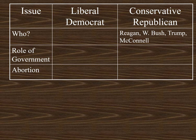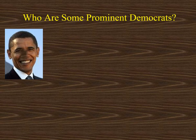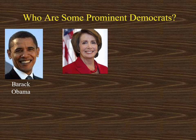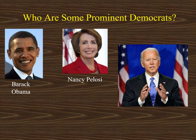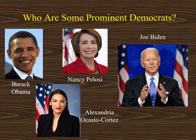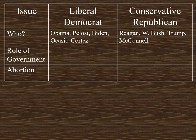Next, I'd like to identify four prominent Democrats. First, former President Barack Obama, who served from 2009 to 2017. Next is Nancy Pelosi — she is the Speaker of the House, the top Democrat in the House of Representatives, and the highest-ranking woman ever in Congress. Next, President Joe Biden, who was just elected in 2020. And one other individual: this is AOC, or Alexandria Ocasio-Cortez — you may be familiar with her because she's gotten a lot of press in the last couple of years.